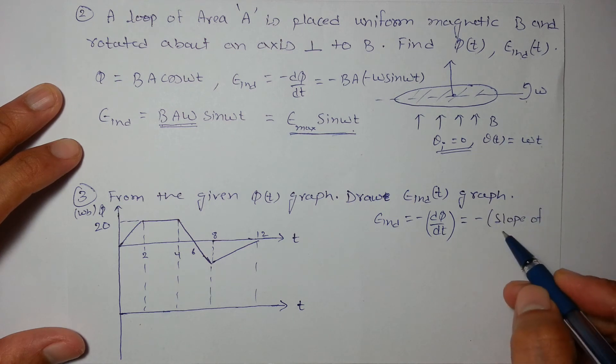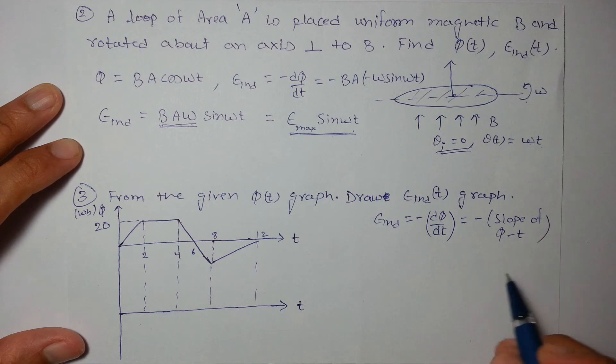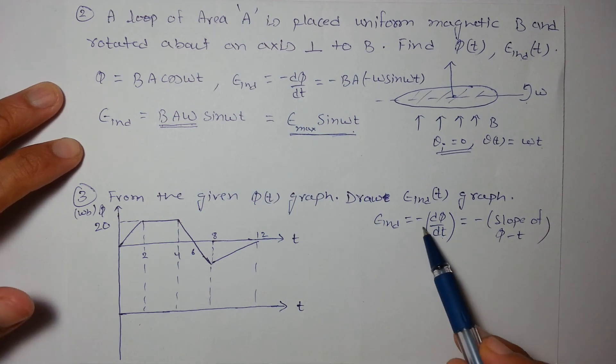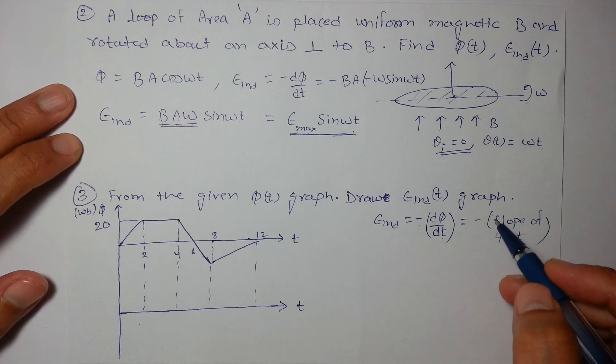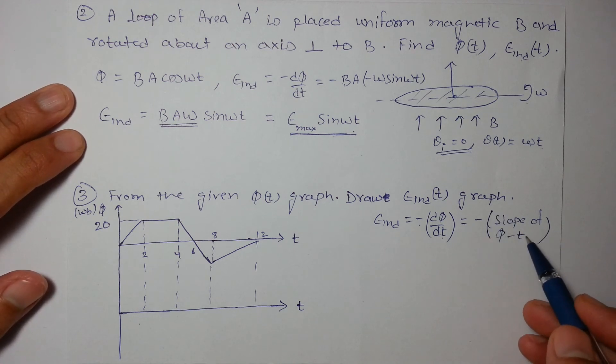dΦ/dt is the slope, and the negative sign is there. So we can say that this is the negative of the slope of φ-t graph.